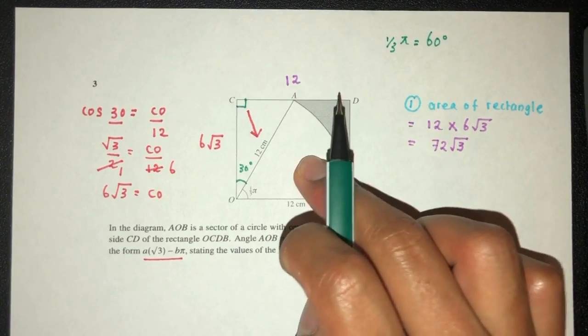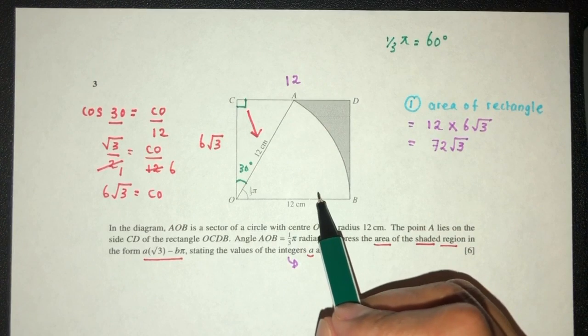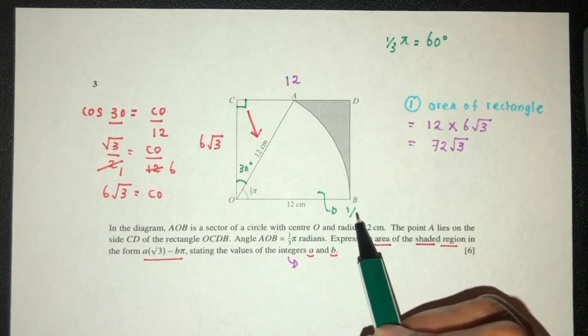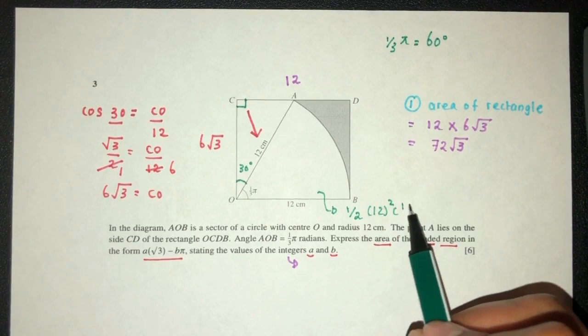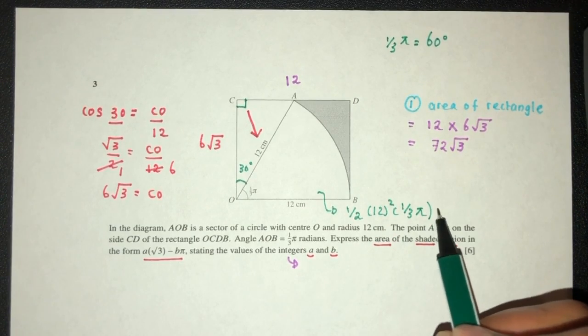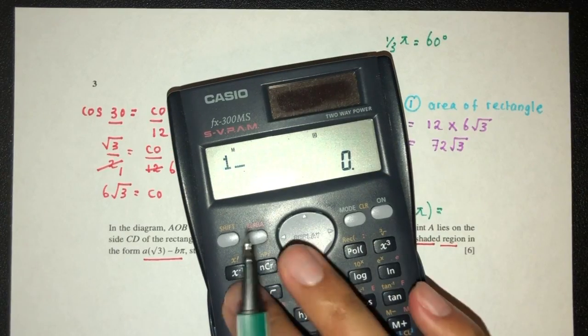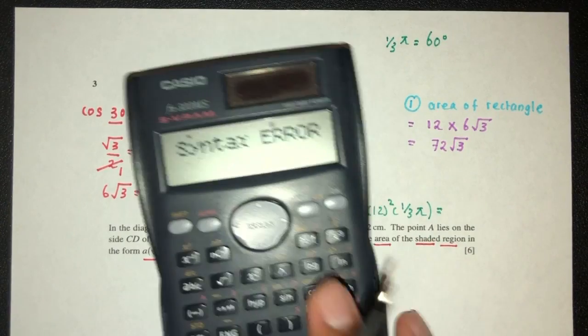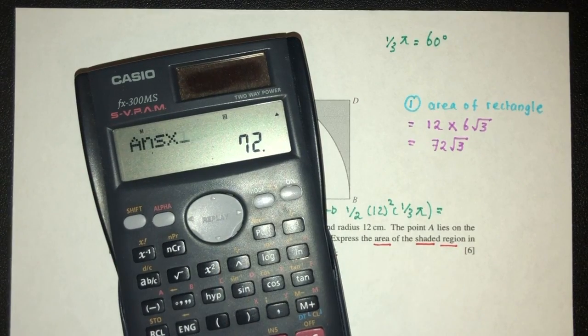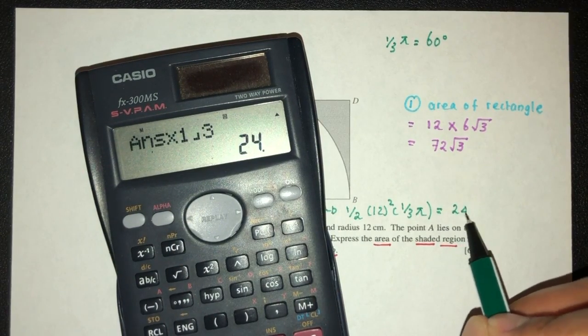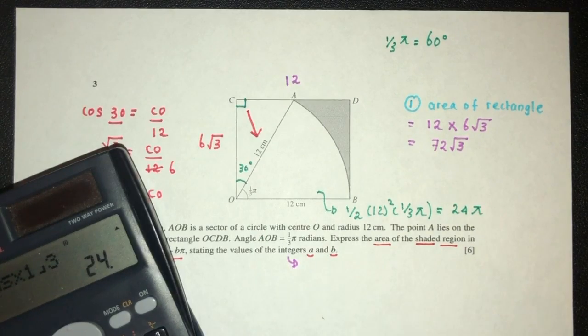Now, obviously, we don't need this area and this area. How would you find area of sector? Half r squared theta, the angle, 1/3 pi. That should be 1/2 times 12 squared. That should be 72 times 1/3. That should be 24 pi for the area of sector.